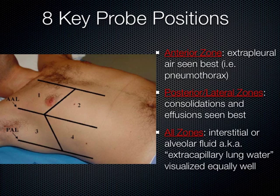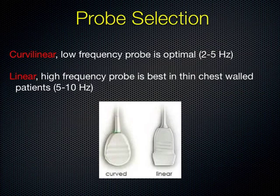For probe selection, ideally we use the curvilinear probe, depending on the patient's body habitus. You can also use the high-frequency linear probe or the cardiac probe. If you're looking for the big picture, start with the low-frequency probe for a deeper view. When looking for detail — like pneumothorax — pick up the high-frequency probe for more detail.